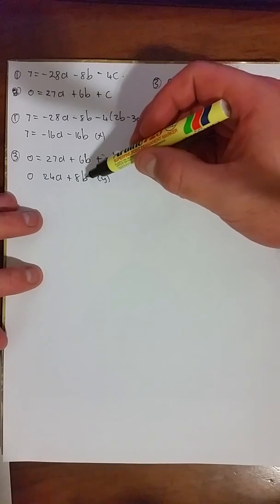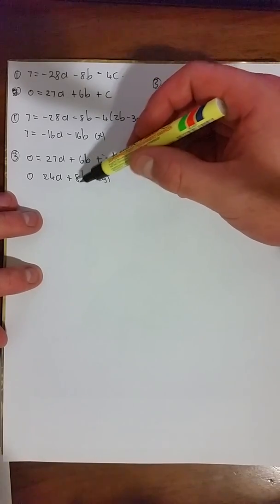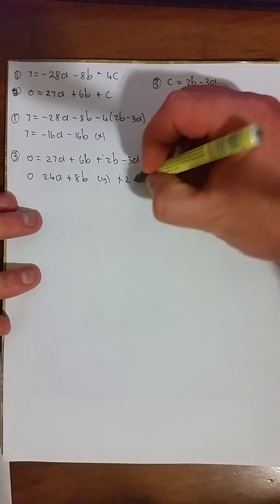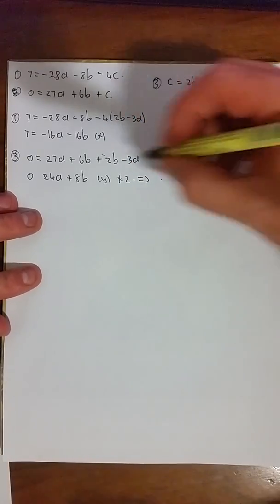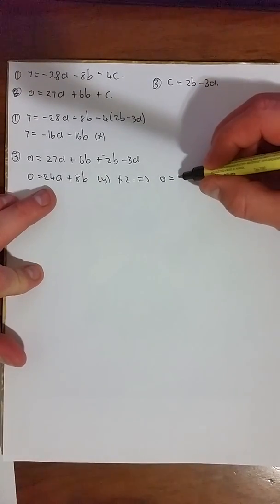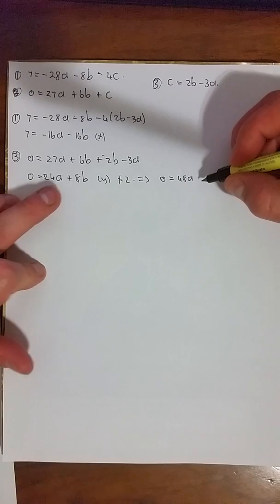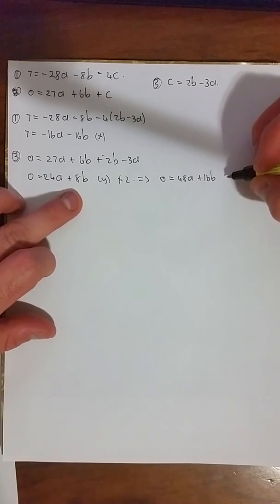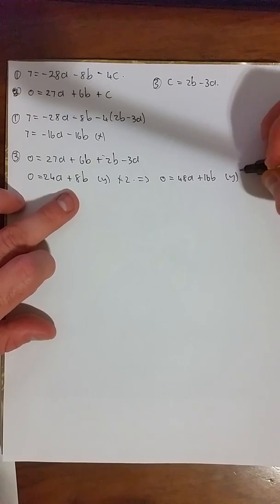You can see, if you just multiply equation y by 2, the b's have the same coefficient. So I'm just going to say times this one by 2, which will give 0 × 2 = 0. 24 × 2 = 48. 8 × 2 = 16. And I'm going to rename this equation y'.